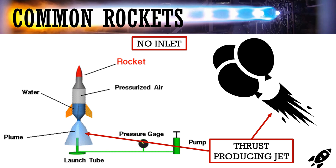Before we wrap up, I wanted to give a quick example or two of a common rocket you've probably come across before. The first rocket is very common in Cub Scouts and Boy Scouts — it's a water rocket, or bottle rocket. Basically, you have a two-liter bottle that you put fins on, maybe a nose cone, put a little bit of water in it, use a bike pump to pressurize the bottle, and then release it. As the pressurized air leaves the bottle, it forms a jet as it goes through the bottleneck.